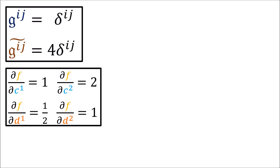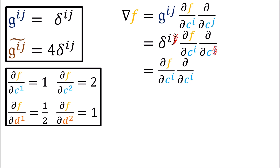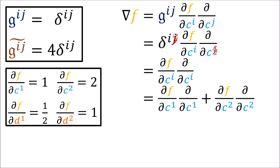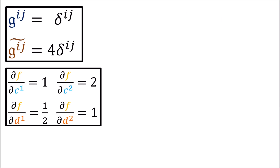Let's compute del f in the c system first. The inverse metric tensor components are just the Kronecker delta, so we can write this and cancel the j indexes. Expanding the summation explicitly in terms of c1 and c2 and replacing the partial derivatives of f with 1 and 2 as calculated, we find that the del f vector field has components 1 and 2.